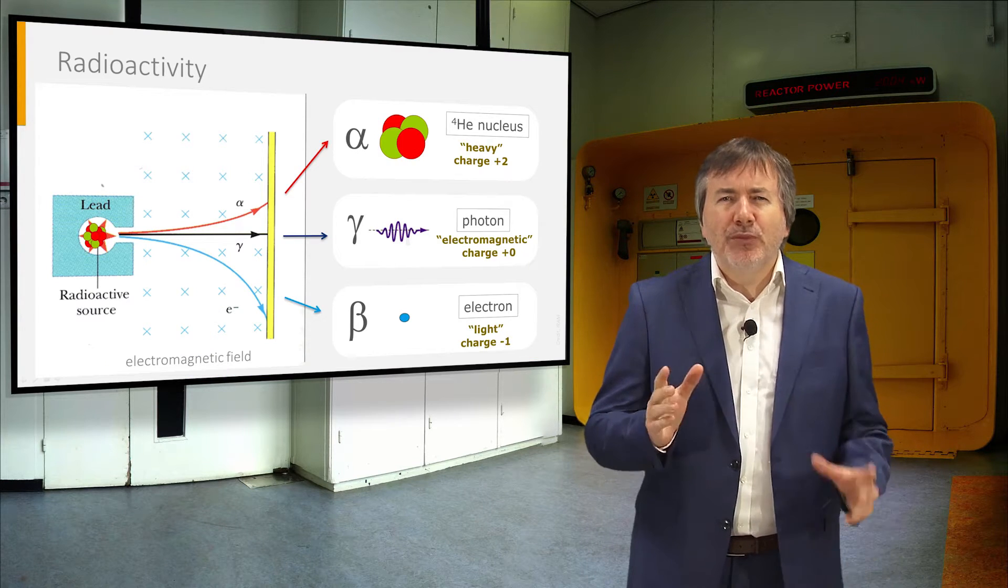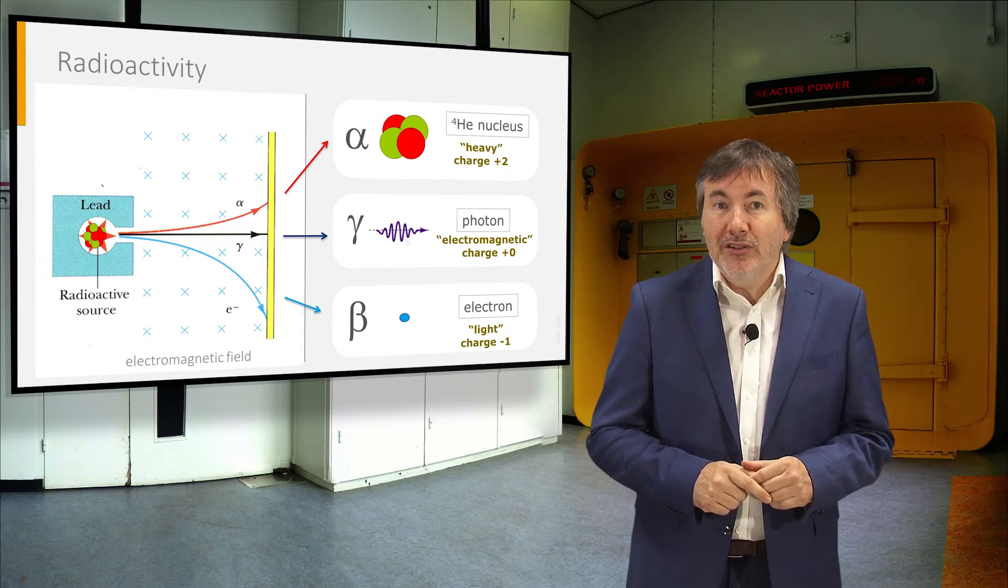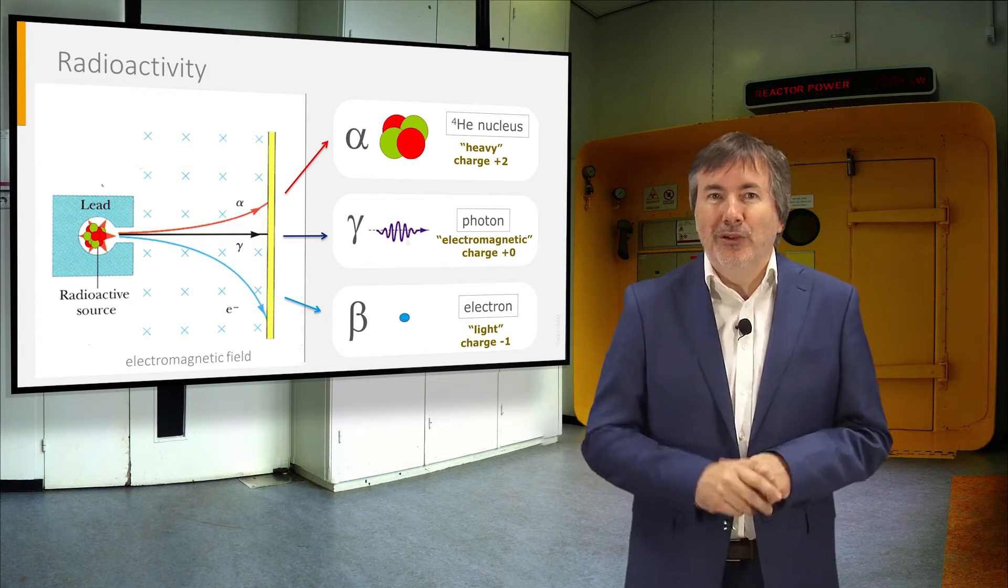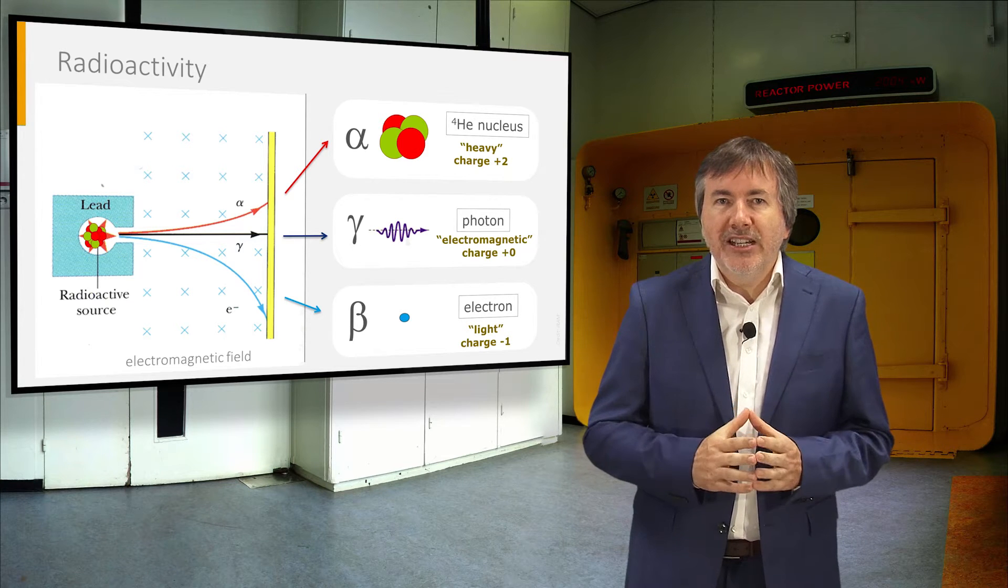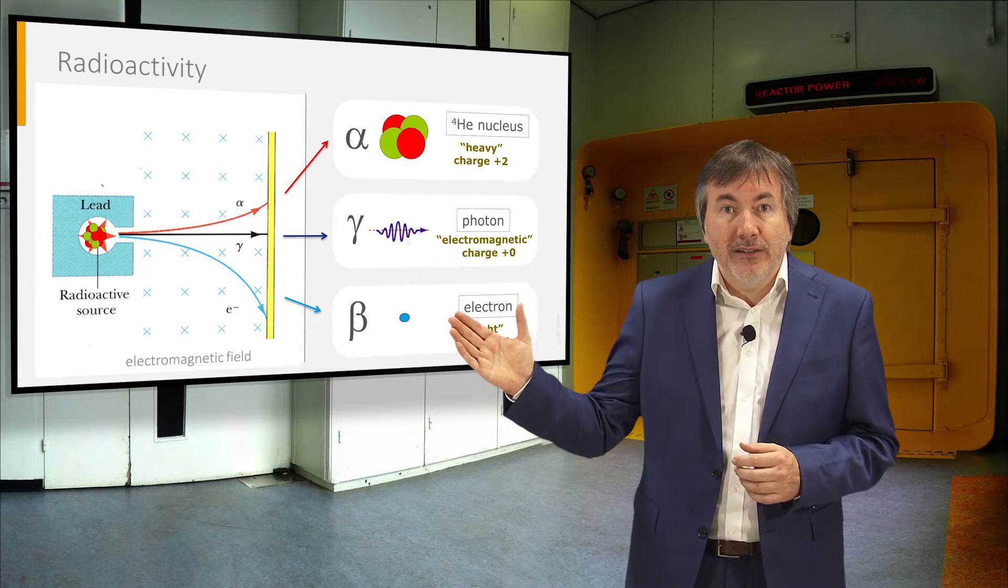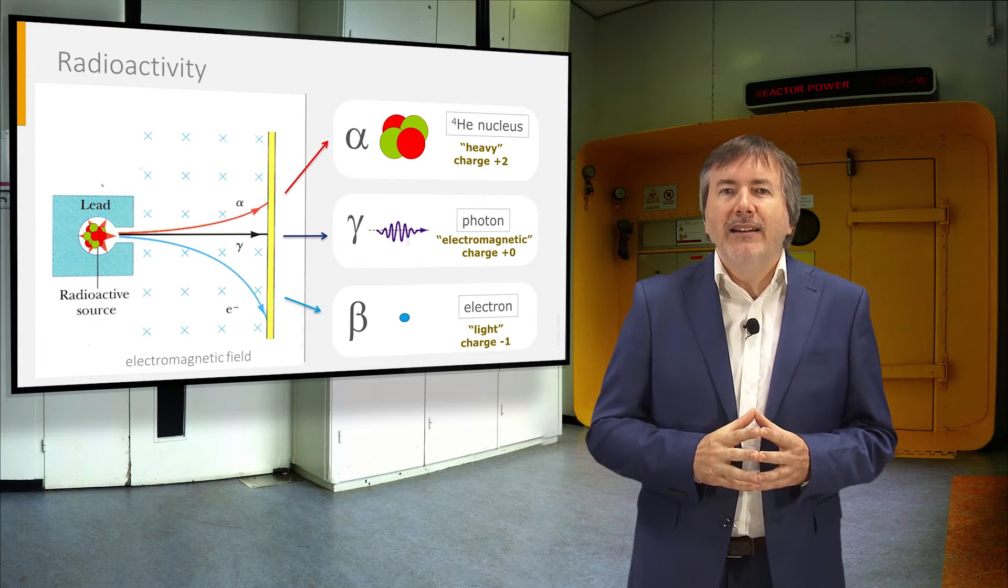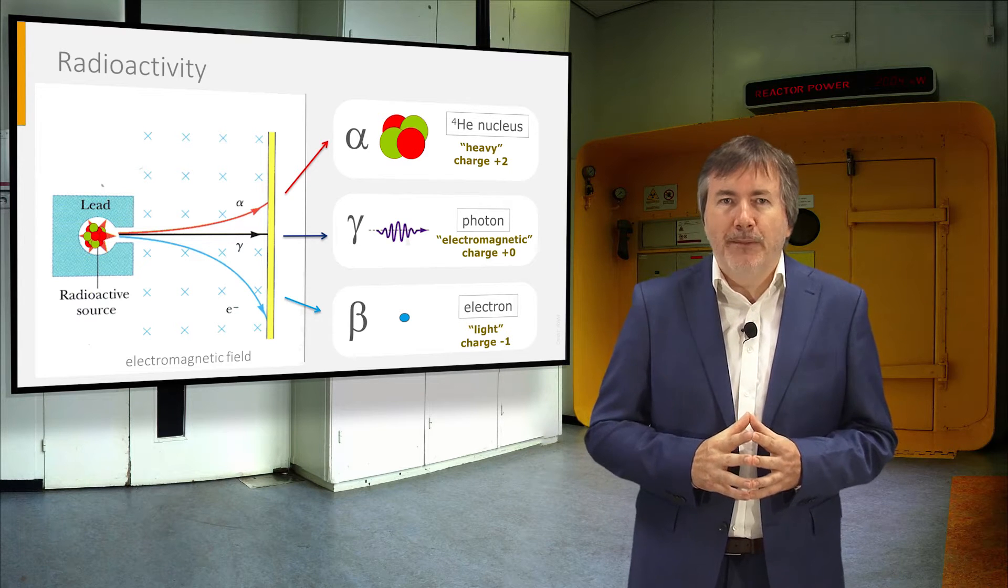Radioactive decay is a spontaneous stochastic process whereby an unstable nucleus transforms into another nucleus. Different types of ionizing radiation can be emitted, such as helium nuclei called alpha particles, high energy photons called gamma rays, and electrons or positrons called beta particles.